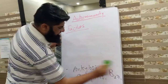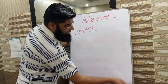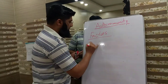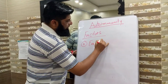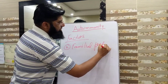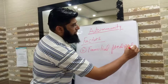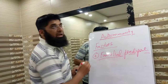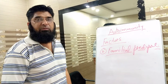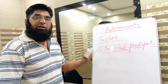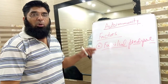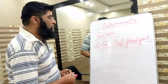Familial predisposition is also related to genetic predisposition. Certain genes are present in families and they make the individual more prone to autoimmune diseases.